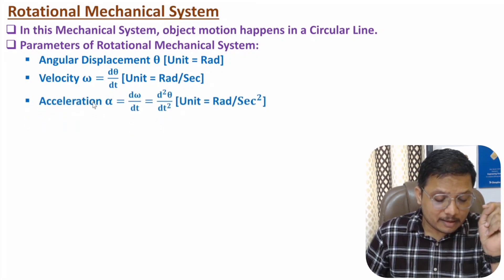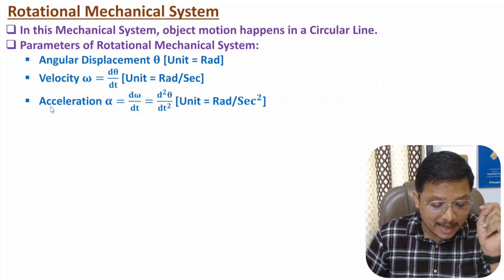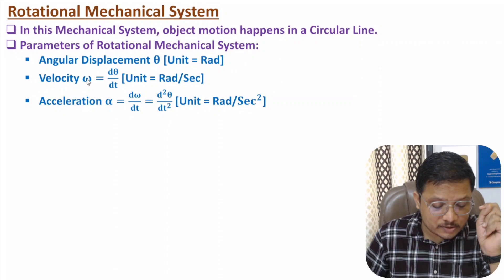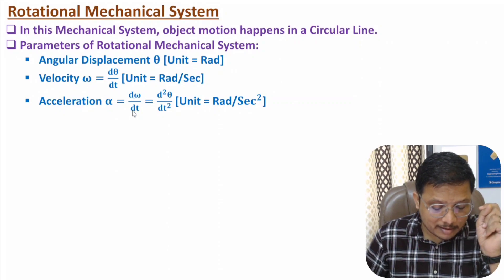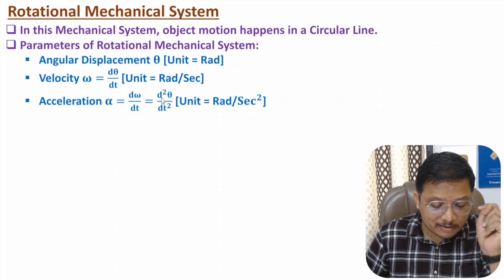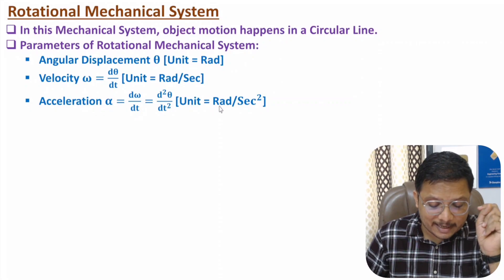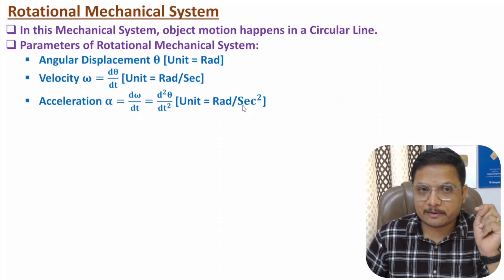In rotational mechanical system we talk about angular acceleration, denoted by alpha, which is the double differentiation of angular displacement with respect to time. The unit of angular acceleration is radian per second square.